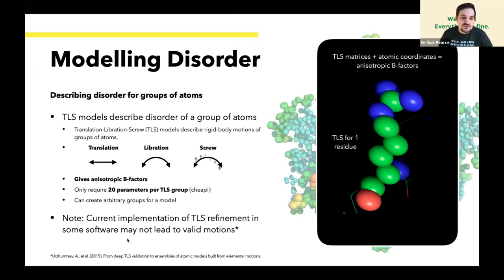There is one note: the current implementation of TLS refinement in some software can create valid B-factors, meaning they have positive values, but they can't necessarily be decomposed into these rigid body motions, which is where the model comes from. It's not a problem, it's just something to be noted in a paper from 2015.